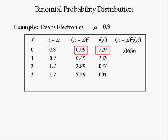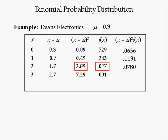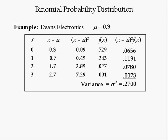Next we take the squared deviation from the mean and multiply by its respective probability from the binomial distribution function with n equal to 3 and P equal to 0.1, yielding probabilities 0.729, 0.243, 0.027, and 0.001. The first product is 0.0656; multiplying 0.49 times 0.243 gives 0.1191; 2.89 times 0.027 gives 0.0780; 7.29 times 0.001 gives 0.0073. The variance is the sum of this column, 0.27 — the same as the shortcut equation. The standard deviation is the positive square root of 0.27, which is 0.5196.